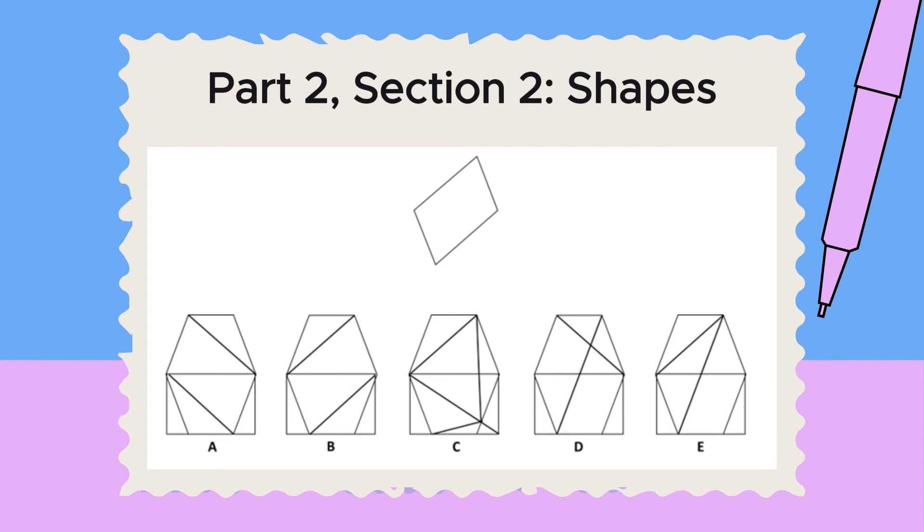All right, now we have come to the last section of the test, called shapes. Each of these questions has a target shape. The target is hidden in one of the five designs. Find where the target is hidden and select the letter of that design. The target will be exactly the same size and orientation. You won't need to imagine it turned around or flipped over. All the sides of the target have to be shown in the design. The correct answer is B. The shape is visible in the middle of the figure.